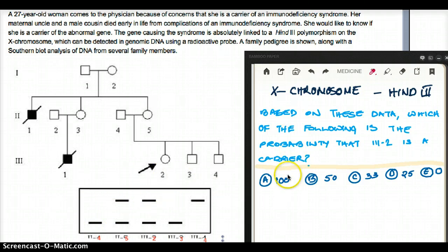Now, the question is right here. The question says that based on these data, which of the following is the probability that 3-2 is a carrier, meaning 3-2 is a carrier. So we have to find out if this, this is our patient, if she is a carrier of the disease and there is an arrow. So just because it's not dark or anything, just don't jump to the conclusion that she might not be a carrier of the disease. This is just a question mark here. Find out if she's a carrier or not. And then we have to find the probability of her being a carrier. Is it 100%, 50%, 33%, 25% or 0%?